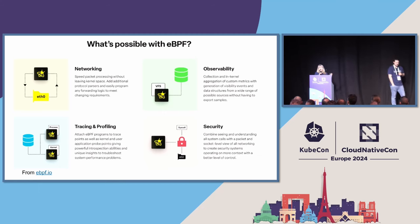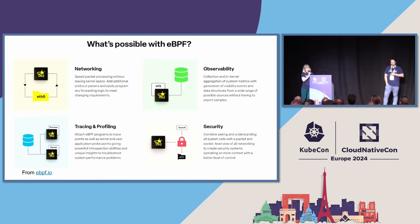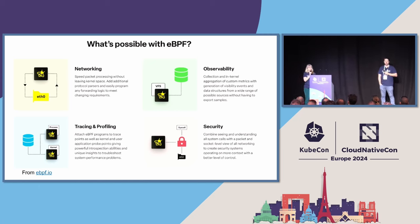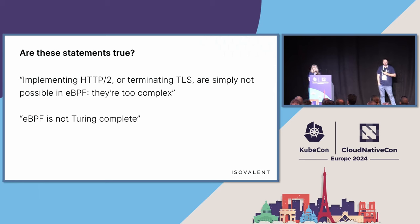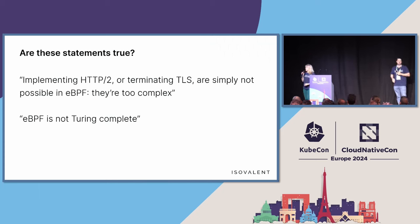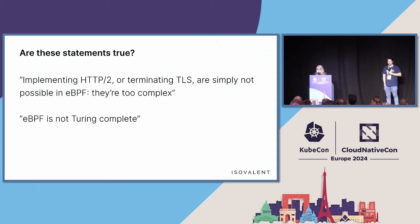There are already lots of really great infrastructure tools built using eBPF. We're both very involved in Cilium and Cilium's subproject Tetragon, doing things like networking, security, and observability. But sometimes you'll hear statements giving the impression that there are limits to what you can do with eBPF — for example, that you can't really implement layer 7 parsing because it's too complex, or that eBPF is not Turing complete. Do we think those statements are true? A hint: these things were not said by people who are working on eBPF.